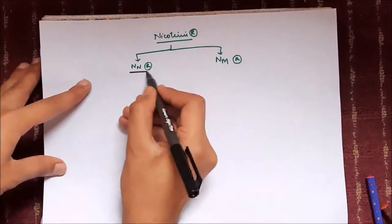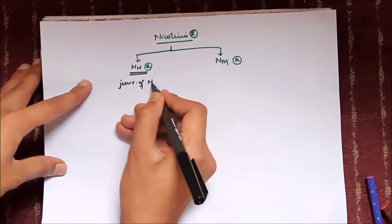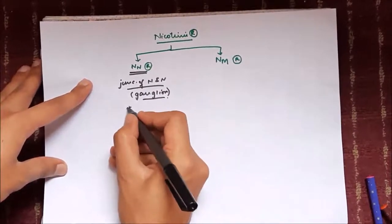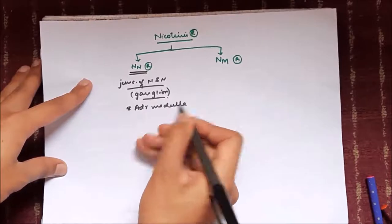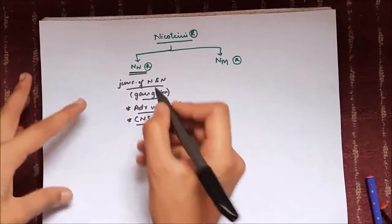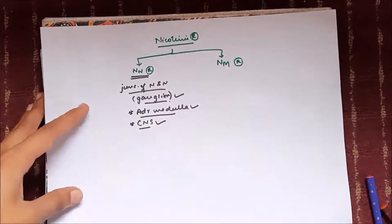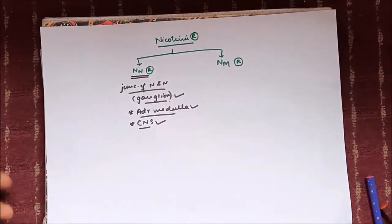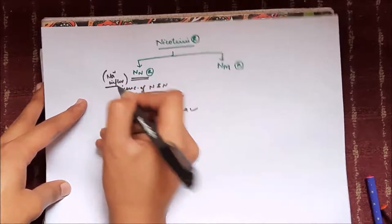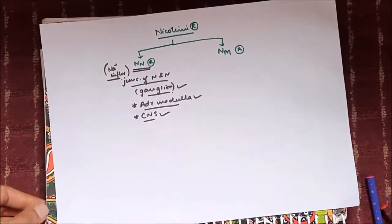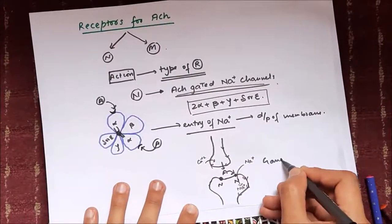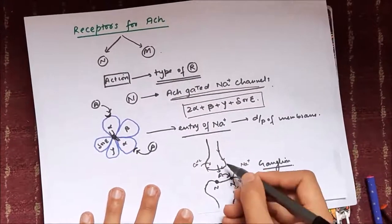Nicotinic receptors can broadly be classified into NN type and NM type receptors. NN type nicotinic receptors are present at nerve-nerve junctions — at ganglia — and also in the adrenal medulla and central nervous system. In all these locations they cause influx of sodium ions, producing depolarization.